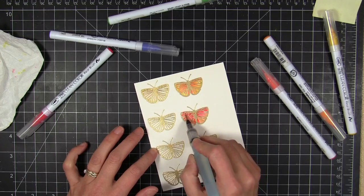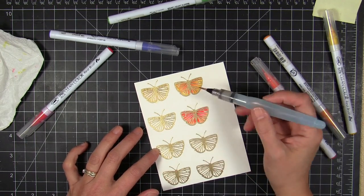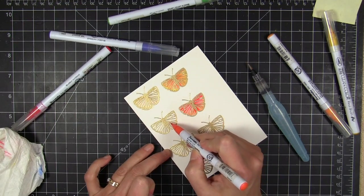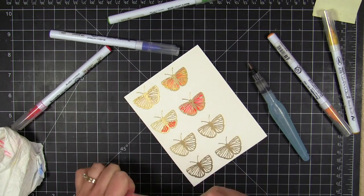I'm just gonna make sure that the heat embossing powder is nicely melted and evenly finished so that I don't have any granular spots showing. And then I'm gonna do some watercolor. And I'm just quickly using the Clean Color Real Brush markers.